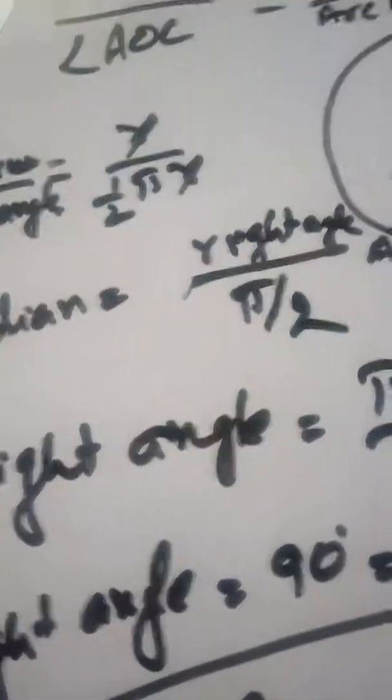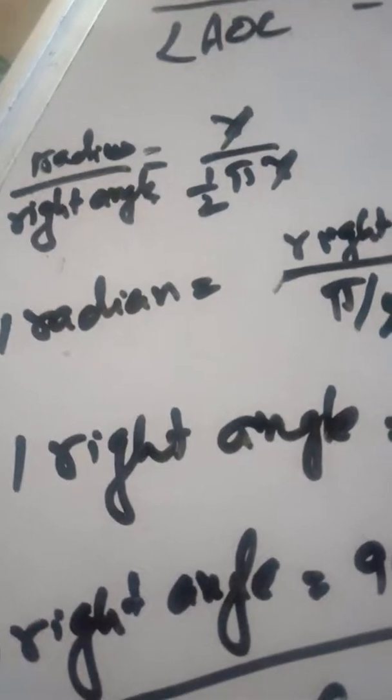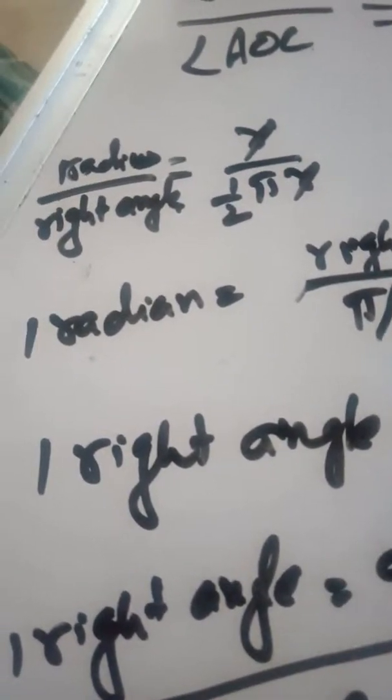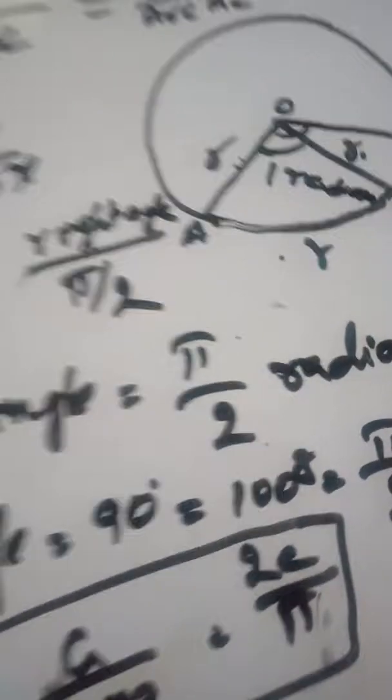So 1 right angle equals π/2 radians. That means if we want to change into circular measure, 1 right angle is π/2 radians.